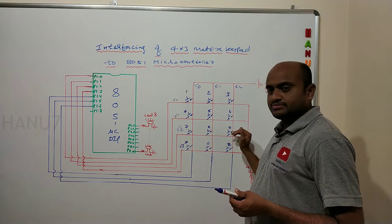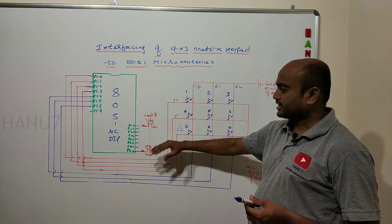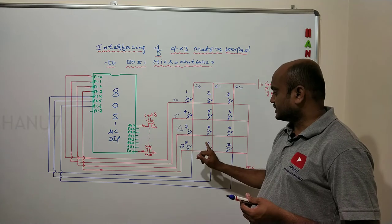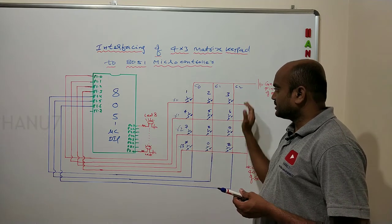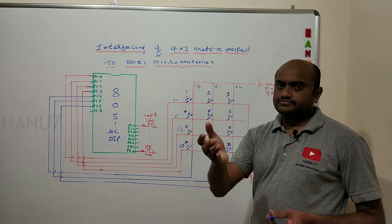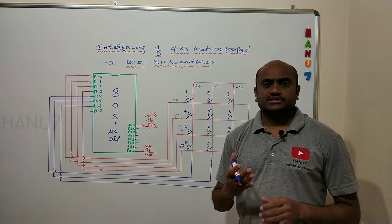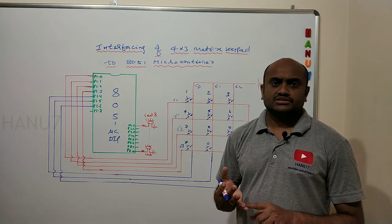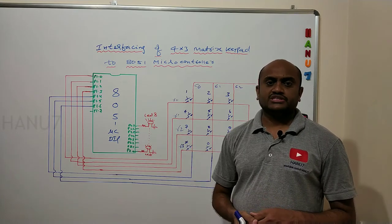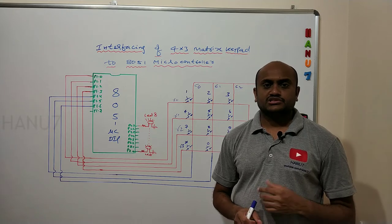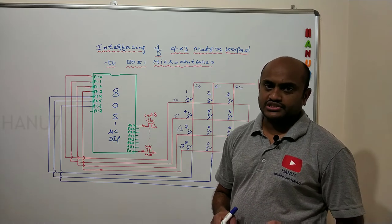For the 9th button, I have chosen some other pattern, like blinking of these LEDs. Similarly for star, zero, and hash. This programming part we will discuss in the software part, where we can see how to program the 8051 to interface the 4 by 3 keypad. We will also see the simulation part in Proteus.